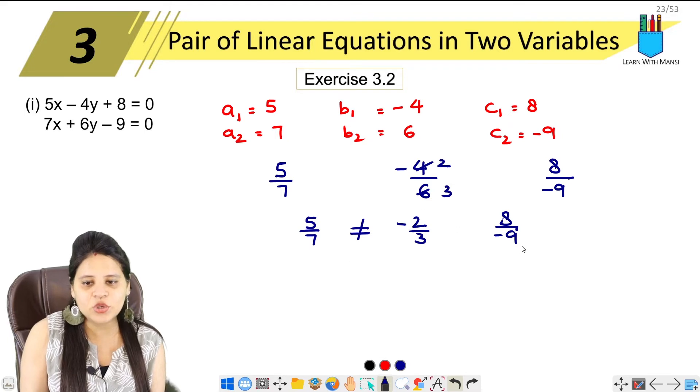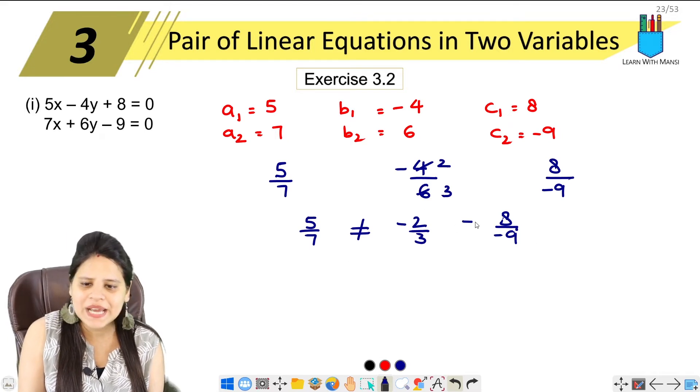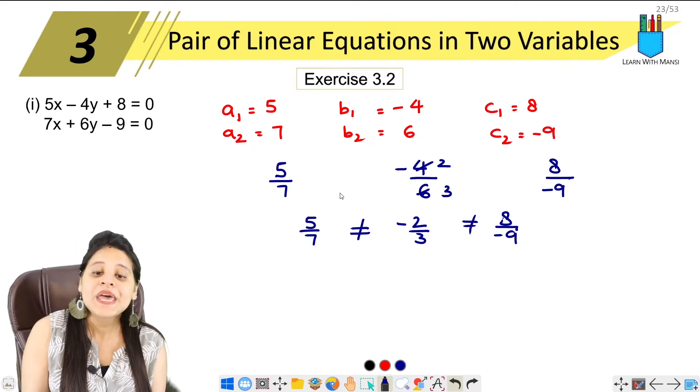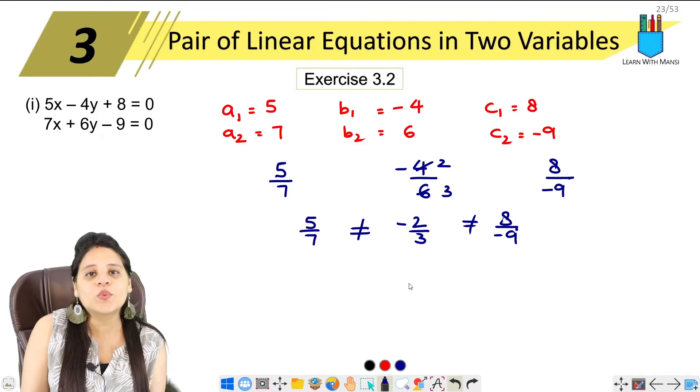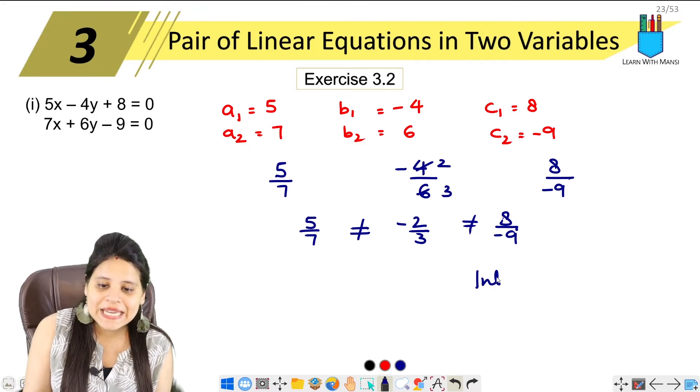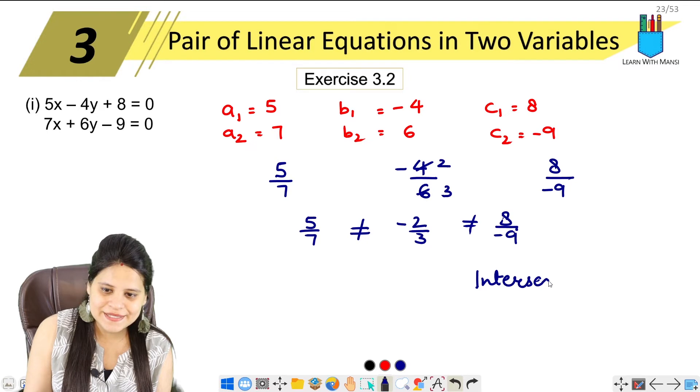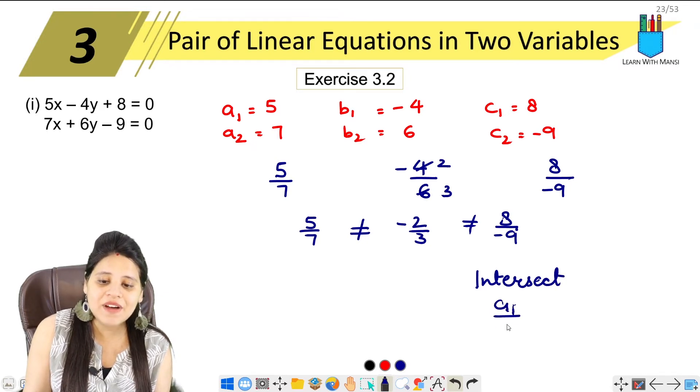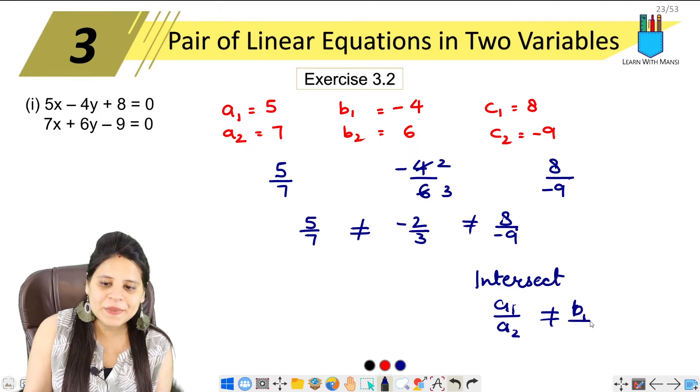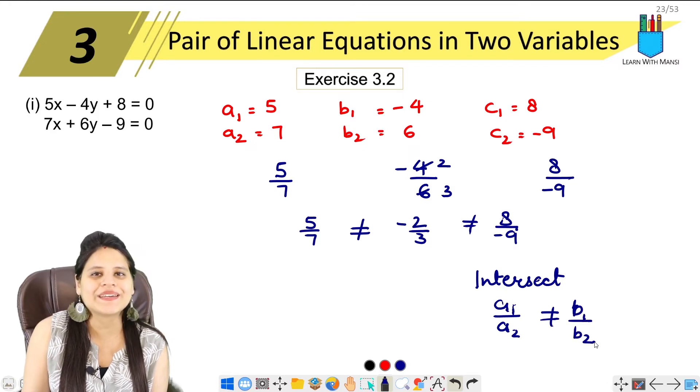So here we have seen, first we have 5/7 is not equal to -2/3. We don't need to go further. Because these two are not equal, the lines will intersect, because a₁ upon a₂ is not equal to b₁ upon b₂.